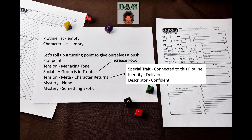The next thing you should do is to make two lists: a plotline list and a character list. Both are empty. I haven't generated any plotlines yet, and my players haven't created their characters. So let's roll our first turning point that will generate our first plotline. First we determine the theme randomly, then the plot point. I rolled some dice and got the following themes and plot points: Tension — Menacing tone. Social — A group is in trouble. Tension — Meta, Character returns. None — Something exotic. Two of these plot points require us to introduce characters. 'A group is in trouble' tells me to determine which character is in power to resolve these situations, so I will assume that it's one of the player characters that haven't been generated yet. 'Character returns' tells me to introduce a new character if there are no actual characters to return, so let's get to it.